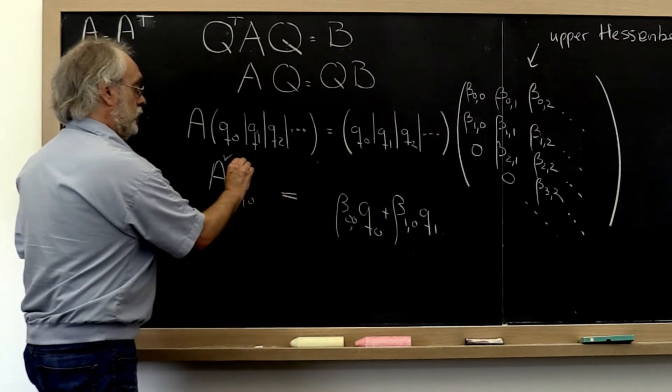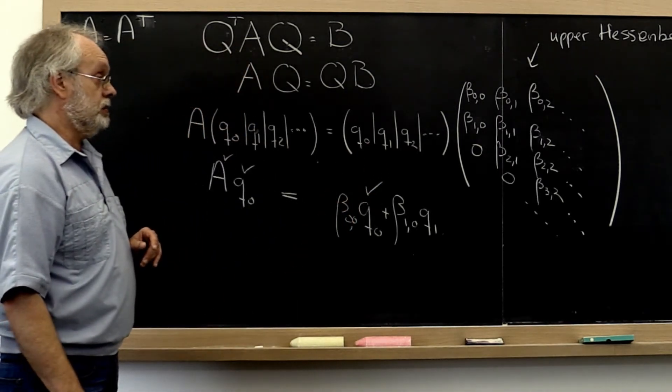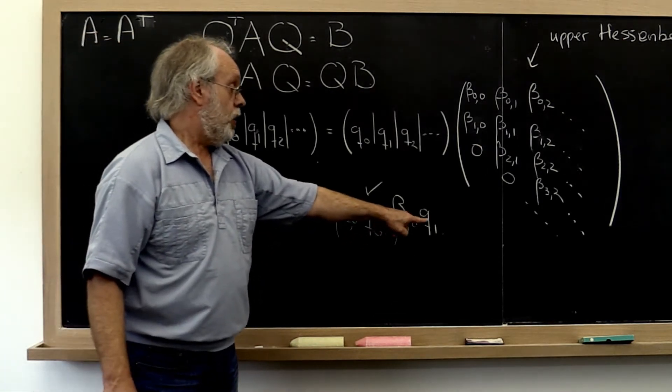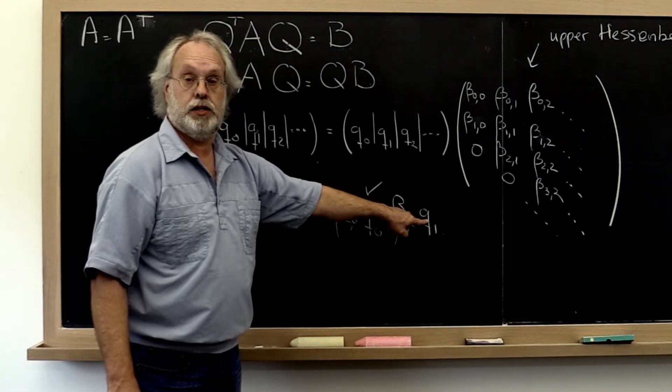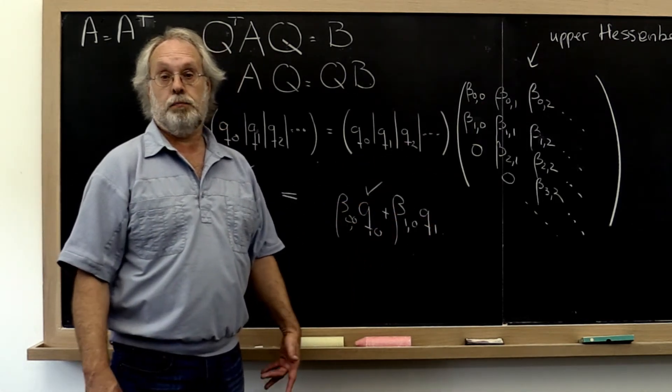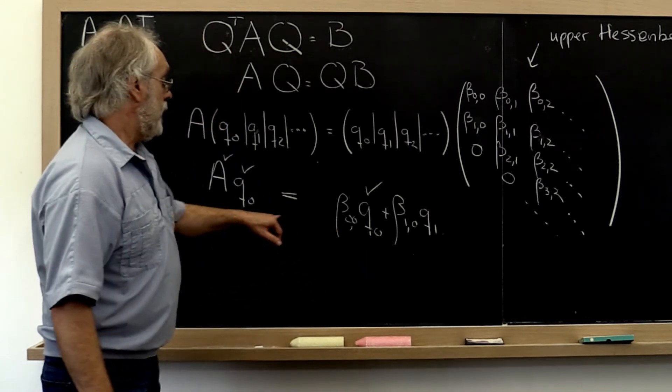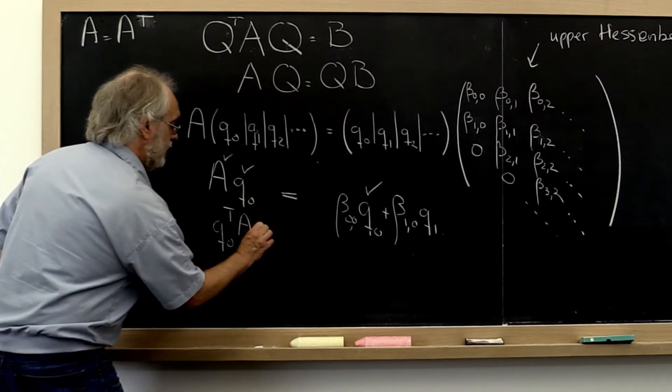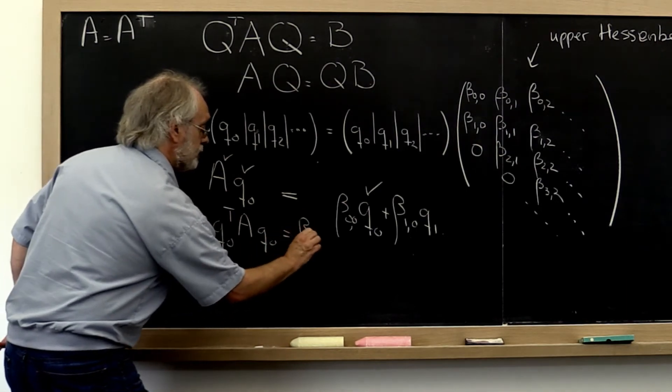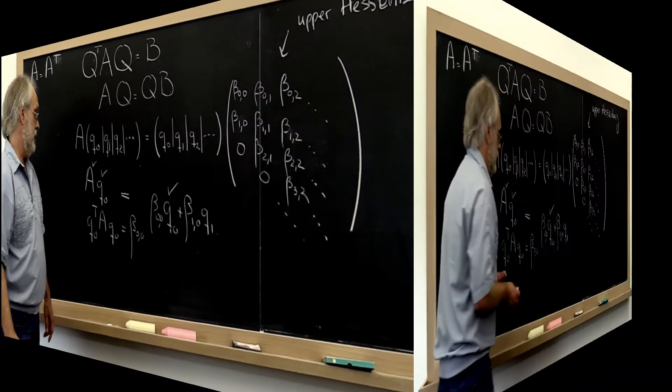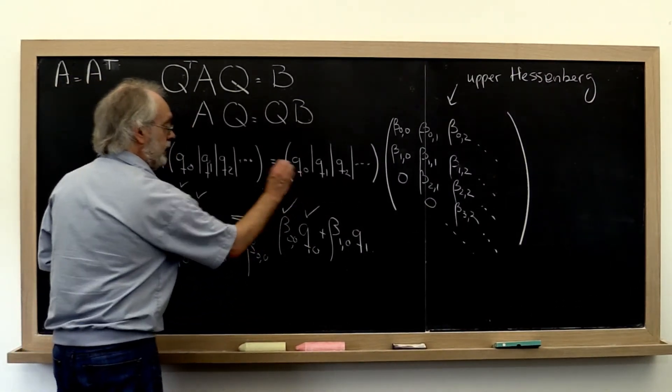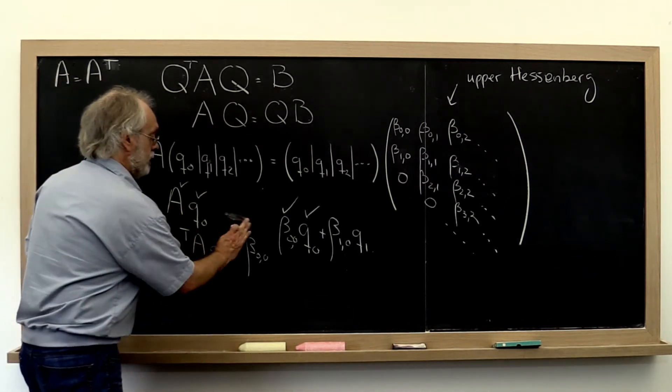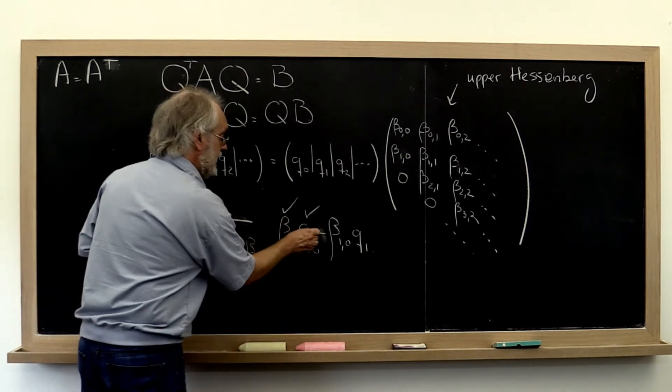Now A is known, Q zero is known, Q zero is known here. We know that Q zero is orthogonal to Q one. So just like when we came up with the algorithm for computing the Gram-Schmidt process, we say we can then compute beta zero zero by saying, let's look at Q zero transpose A Q zero. That must be equal to beta zero zero. So at this point we've also uniquely determined beta zero zero.